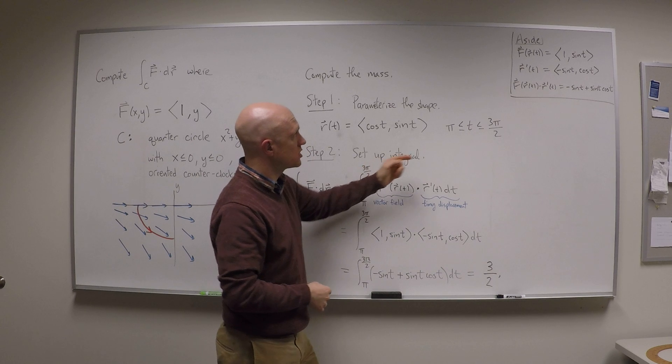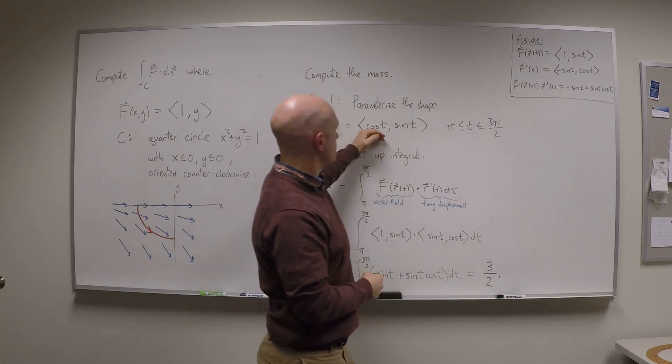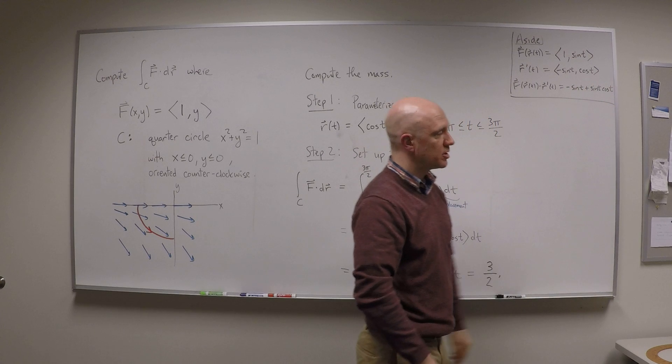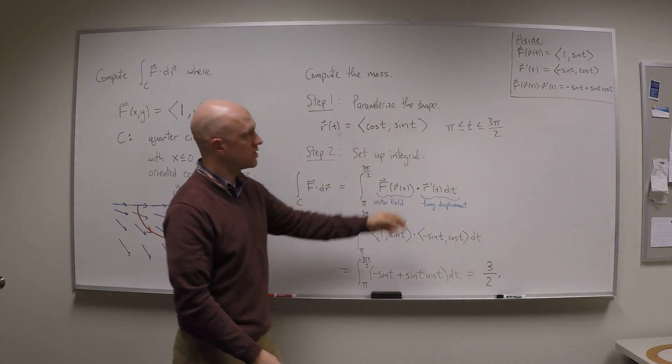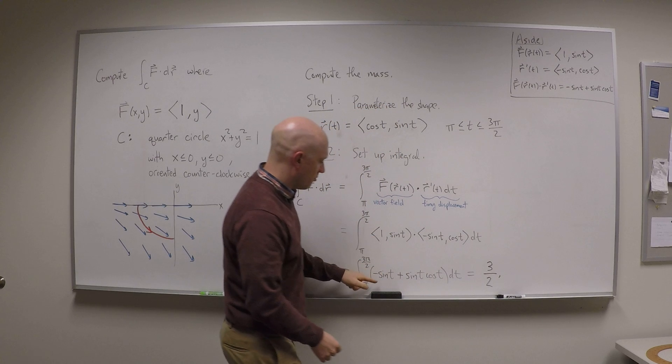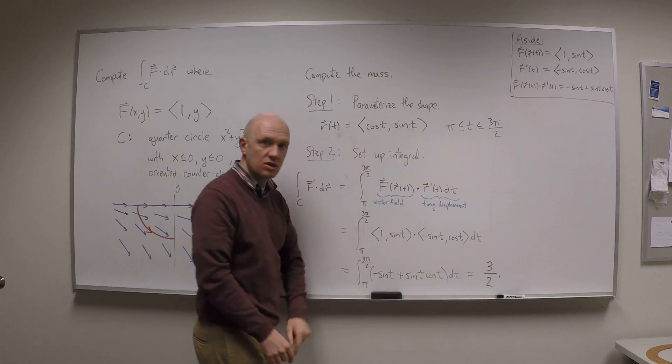R prime of t dt, well I can just compute r prime. r is cos t comma sine t, so r prime is minus sine t comma cos t. Now let's take their dot product. I dot this vector into this vector and I get minus sine t plus sine t cos t.